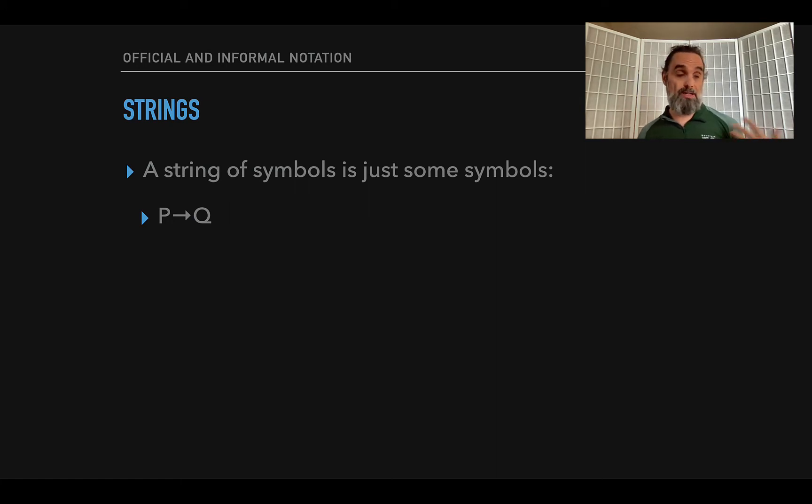So it might be P arrow Q is a string of symbols. That's a sentence in informal notation. Parenthesis P arrow Q parenthesis, that's a sentence in official notation. Arrow negation Z, that's gobbledygook. Negation Z arrow Q R parenthesis, that's also gobbledygook. Negation parenthesis P arrow Q parenthesis, that's another sentence in official notation. All of those are strings.